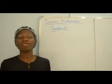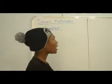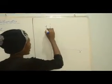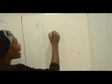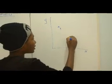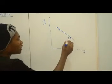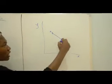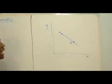Our gradient simply means the rate of change in our y-axis and in our x-axis. If we assume we have a slope with an x and y positive axis, and we have points A and B, our gradient measures the rate of change from point A to point B. That's what our gradient talks about.